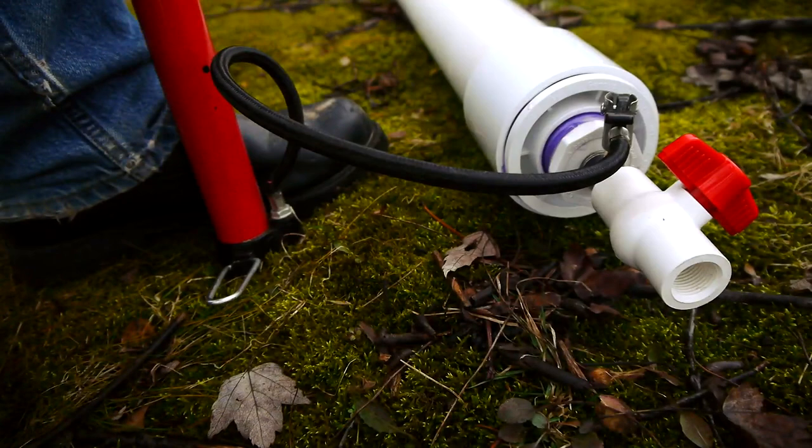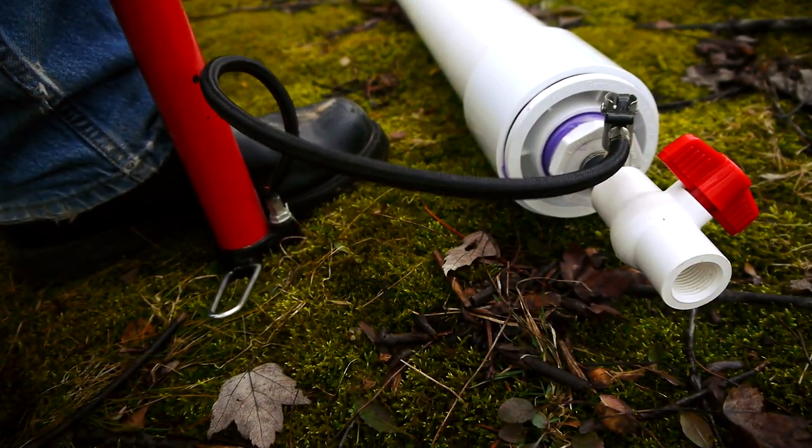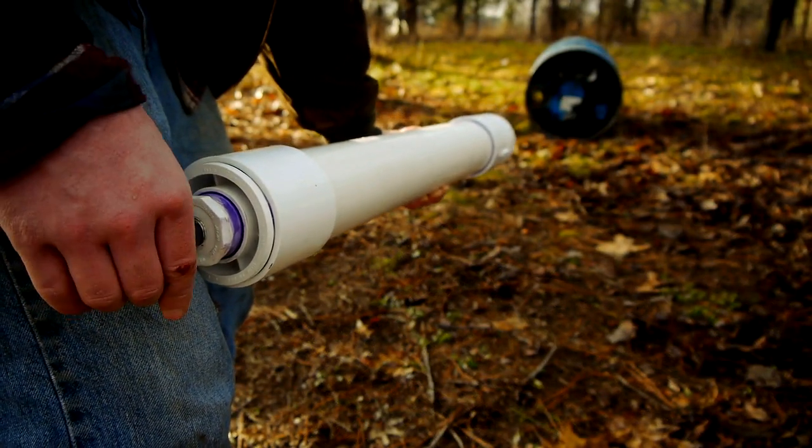With a slug loaded, the chamber can be pressurized with 15 pumps from a bicycle pump or 40 psi from an air compressor. Always keeping the barrel in a safe direction. When ready to fire, the ball valve is opened.